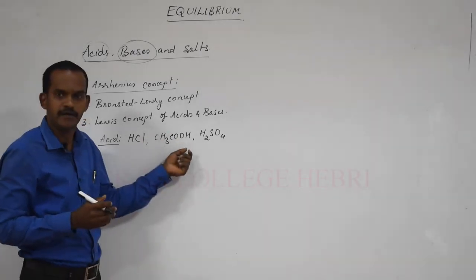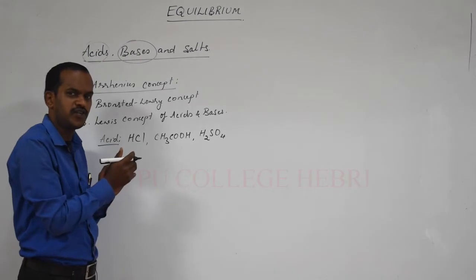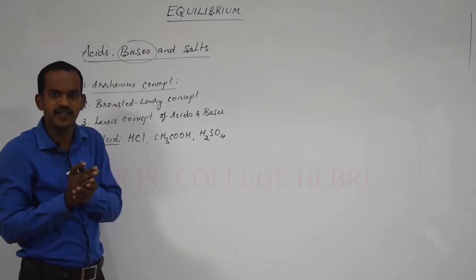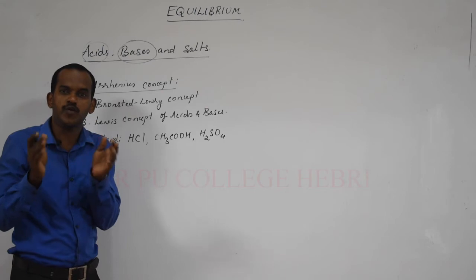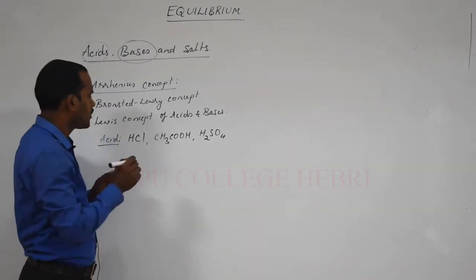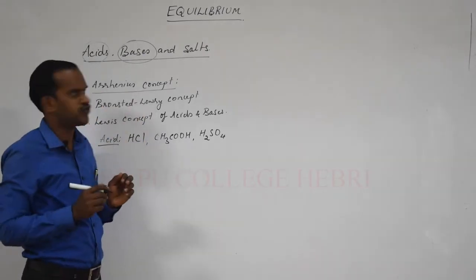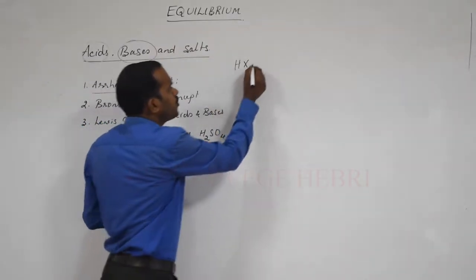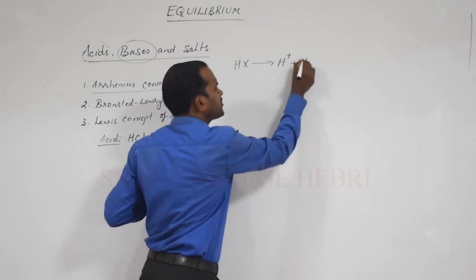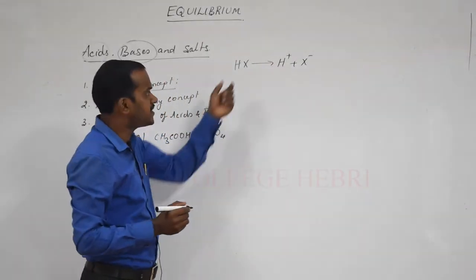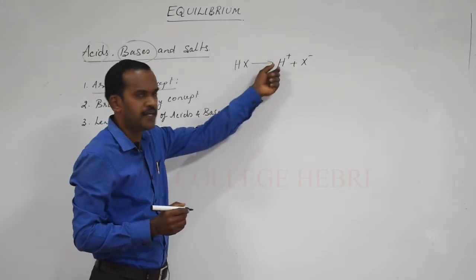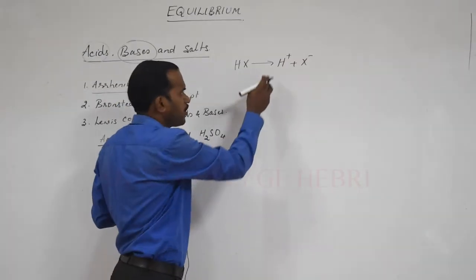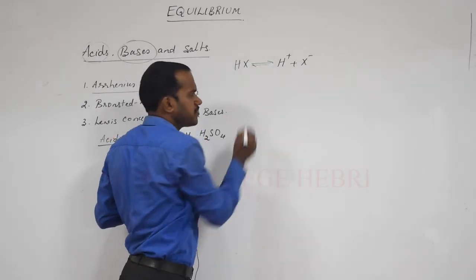The common thing you can see in all these acids is hydrogen. So the first concept which explains about an acid is: is it dissociating to give H+ ions when it is added to water? According to the Arrhenius concept, if I write acid as HX, this HX dissociates to give H+ and X−. When it is added to water, remember students, the H+ ion is unstable. Depending on the acid, it may be reversible or irreversible.